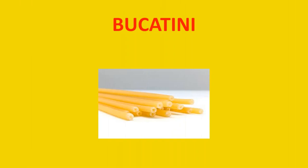Next up we have bucatini. This pasta is shaped like a straw — it is a spaghetti-kind of pasta but a little thicker, and there's a hole running through the middle. It's pronounced as bucatini. That's another popular type of pasta.